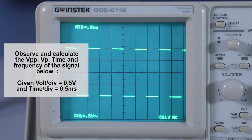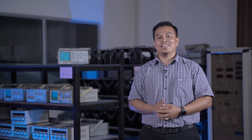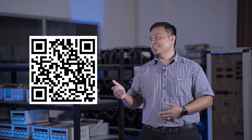Given: volt per division is 0.5 volts and time per division is 0.5 milliseconds. For the answers, please scan the QR code on the screen.